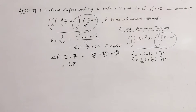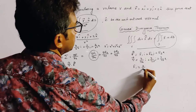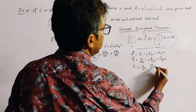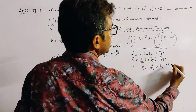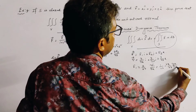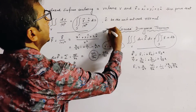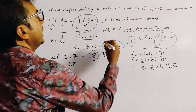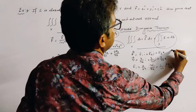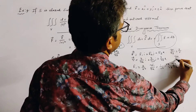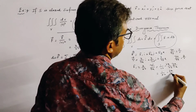We find del(f1)/del(x). Since f1 = x/r², del(f1)/del(x) = 1/r² − (2x/r³)·(del r/del x). From r² = x² + y² + z², we get 2r·(del r/del x) = 2x, so del r/del x = x/r. Similarly, del r/del y = y/r and del r/del z = z/r.